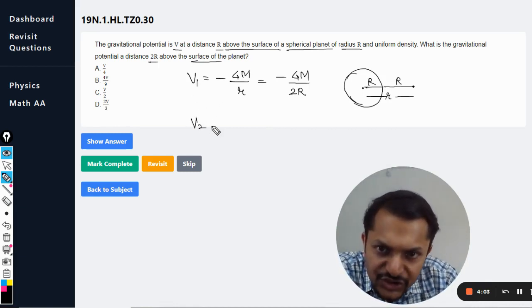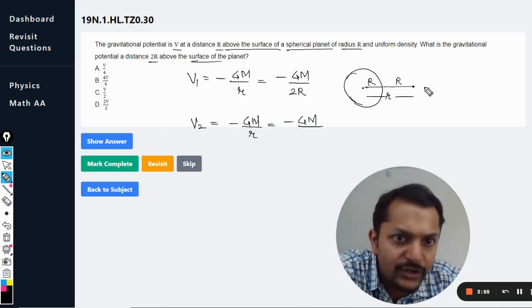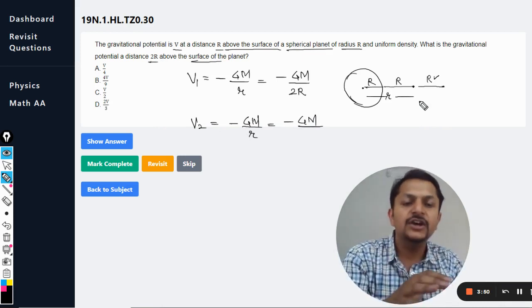What is the gravitational potential when GM/r is the general formula? I am going to substitute it here. Now we are going to increase this distance, so now the small r is equal to 3R.